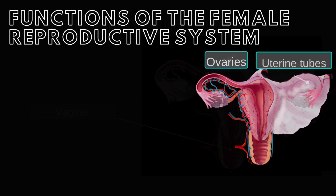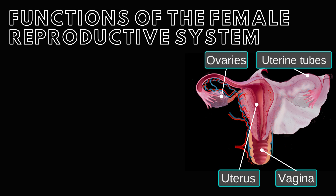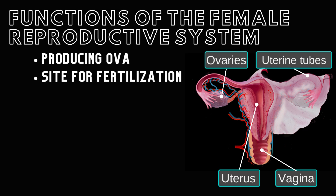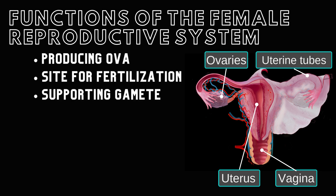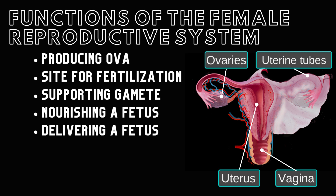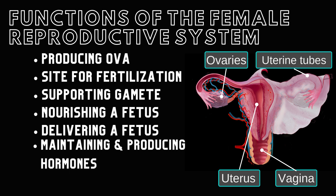The female reproductive system has many crucial functions such as producing gametes called ova, providing a site for fertilization, supporting the implantation of the fertilized gamete, providing nourishment to support the developing fetus, delivering a human fetus, producing and releasing sex hormones, and nourishing a baby following delivery.